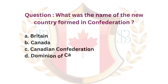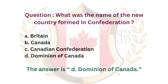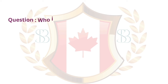Question. What was the name of the new country formed in Confederation? a. Britain. b. Canada. c. Canadian Confederation. d. Dominion of Canada. The answer is d. Dominion of Canada.